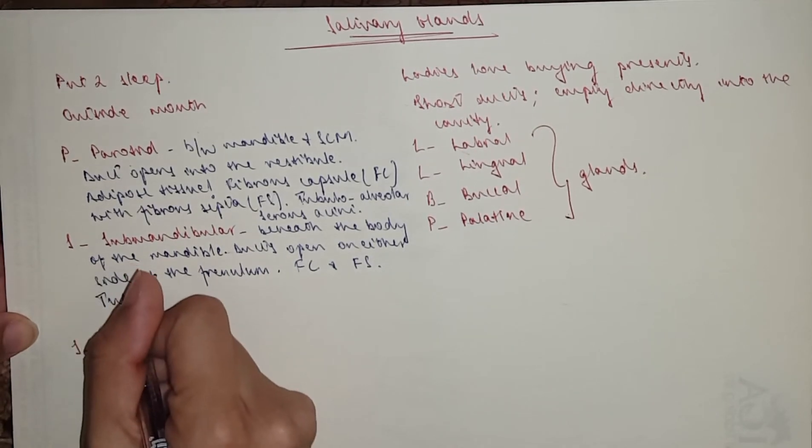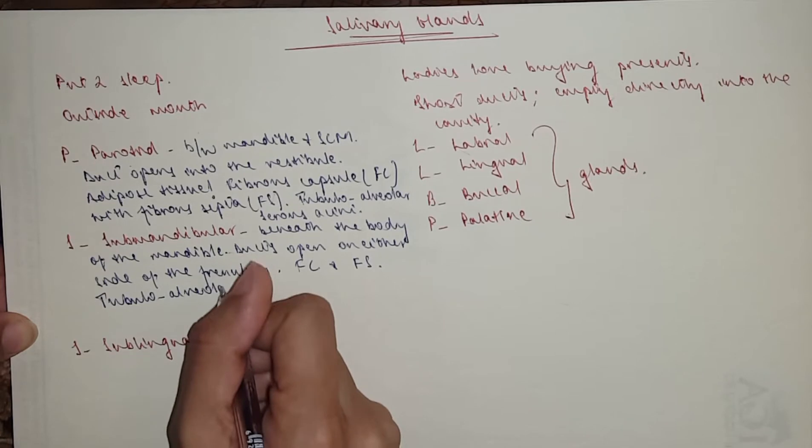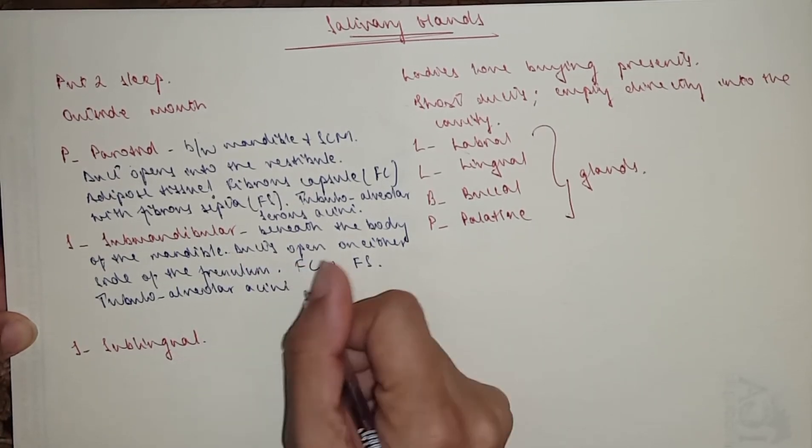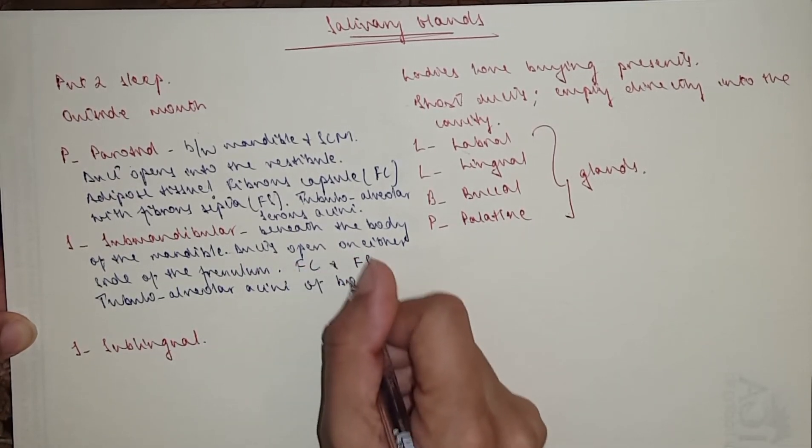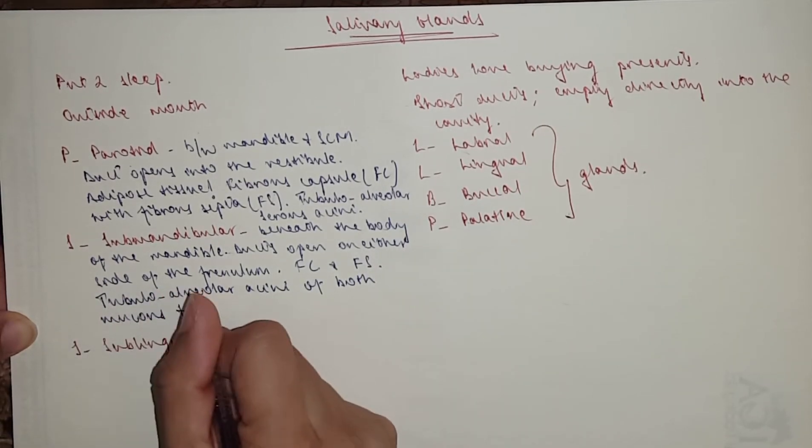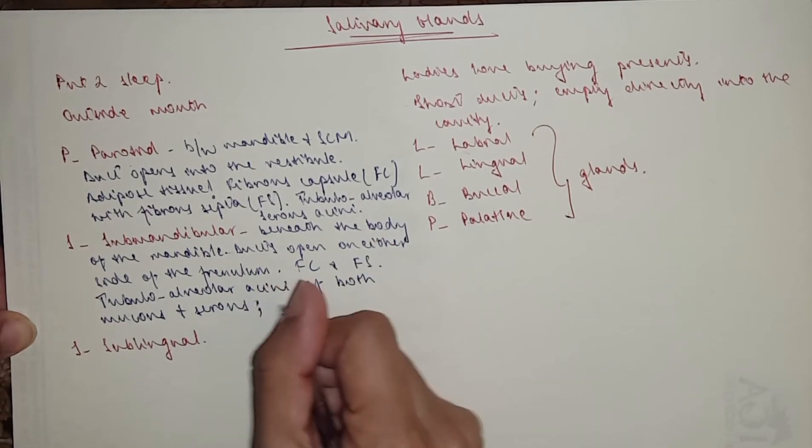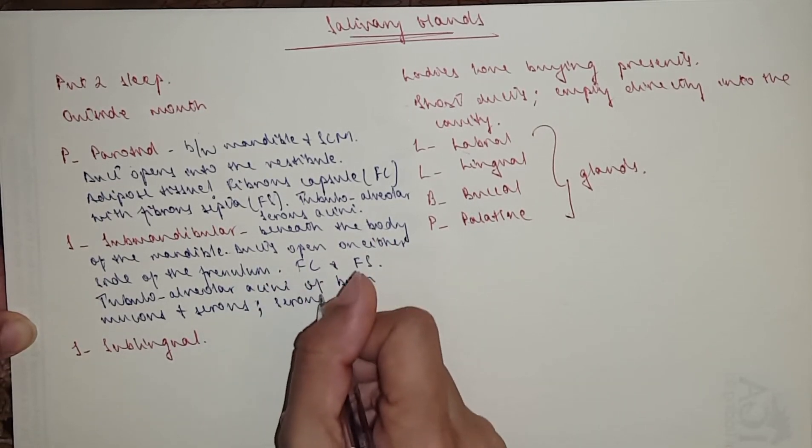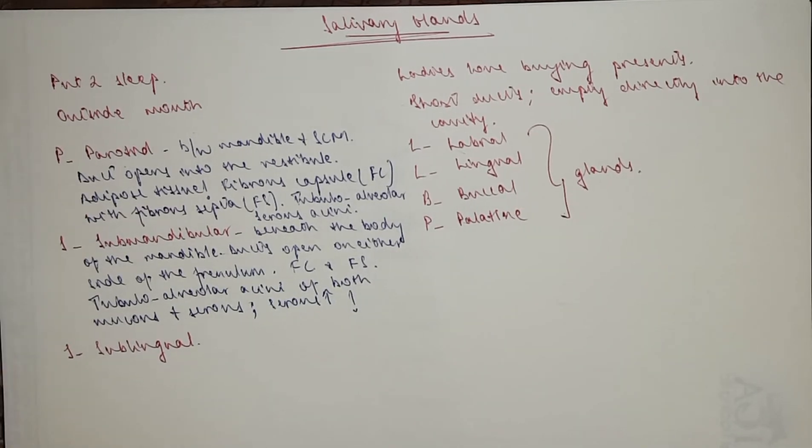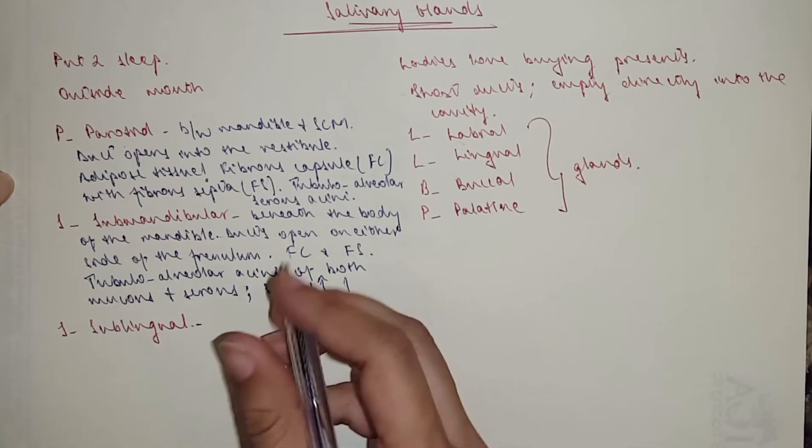You've got again tubuloacinar ducts, acini ducts of both mucous and serous, but remember that the submandibular, the majority is the serous type. Okay, now moving on to the sublingual, which is the smallest one. It is below the floor of the mouth, anterior to the submandibular.